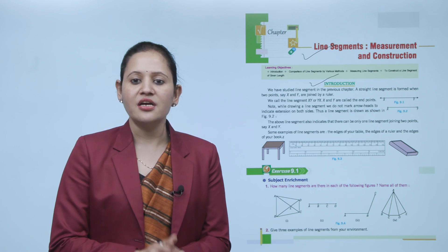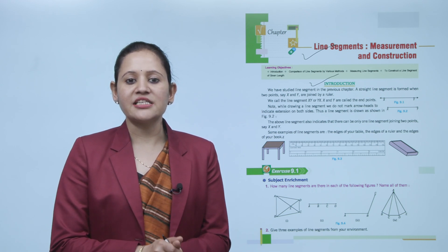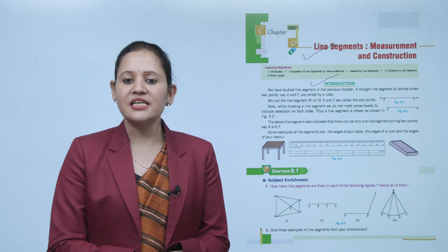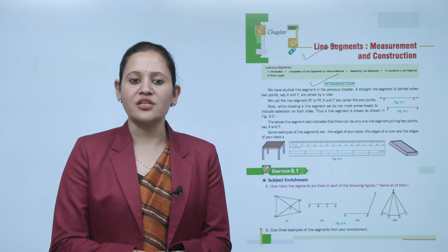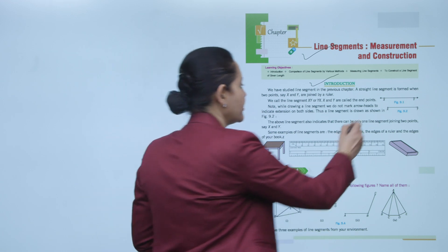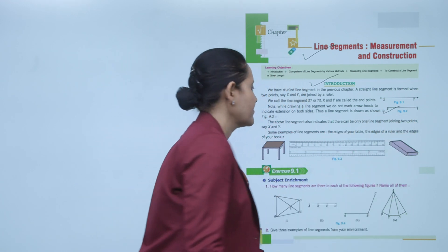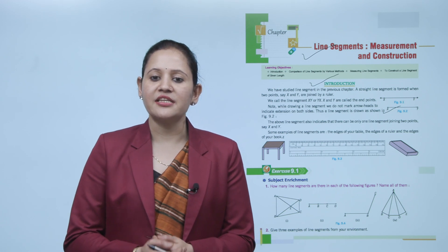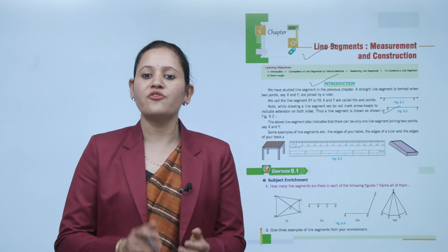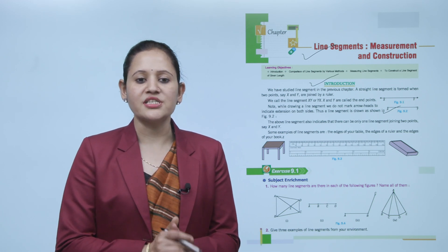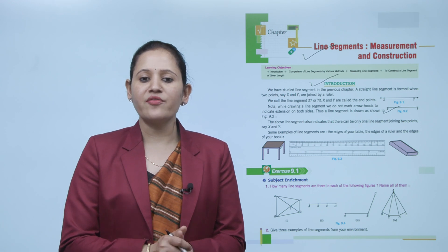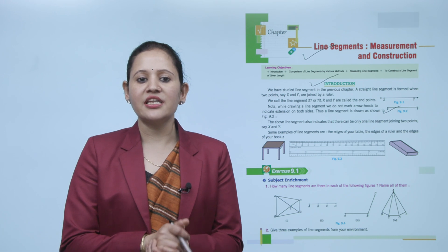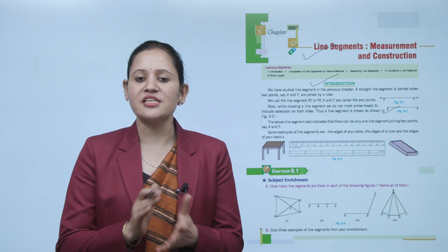Note: while drawing a line segment, we do not mark arrowheads to indicate extension on both sides. The line segment is drawn as shown in figure 9.2. This also indicates that there can be only one line segment joining two points, say X and Y. Some examples of line segments are the edge of your table, the edge of a ruler, and the edge of your book.